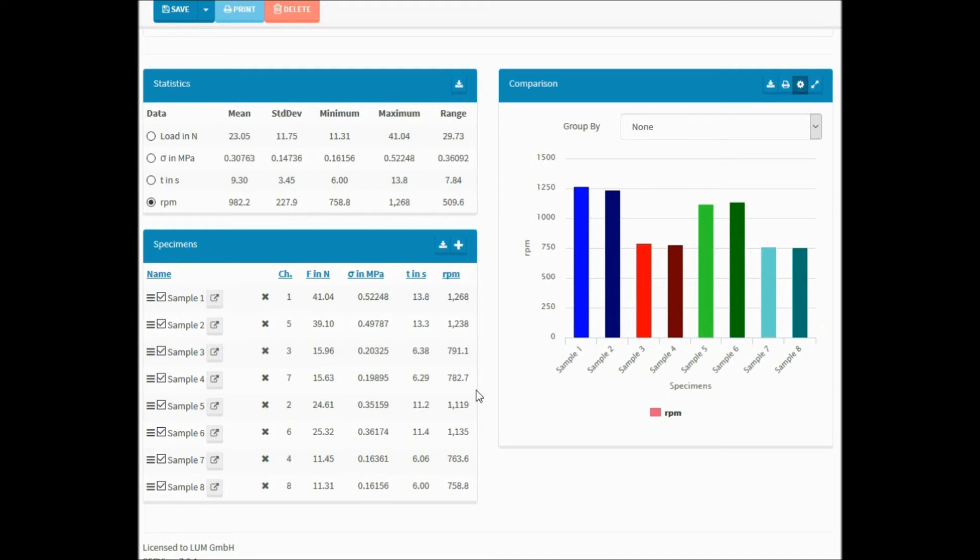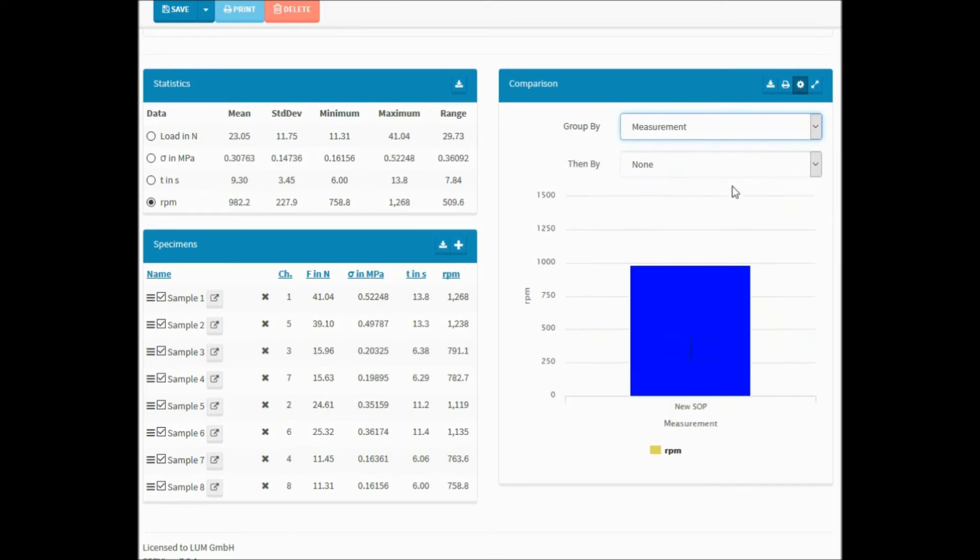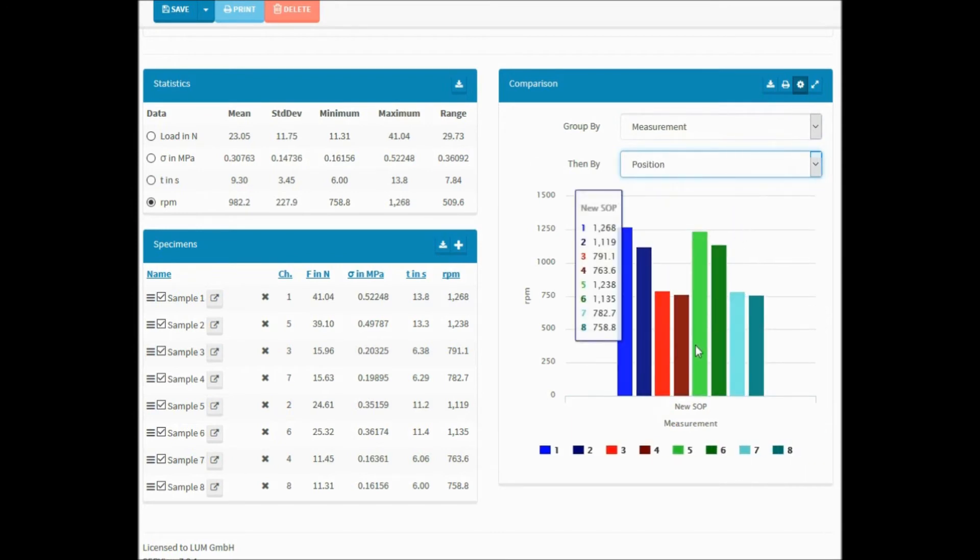The individual information for each sample is shown in the Specimens box. Samples, also from different measurements of the same project, can be added or removed from the analysis by clicking the corresponding buttons. The diagram in the Comparison box can be grouped by up to two selected characteristics, for example, measurement, adhesive, substrate etc. A manual option gives you maximum freedom to sort and arrange in your preferred way.